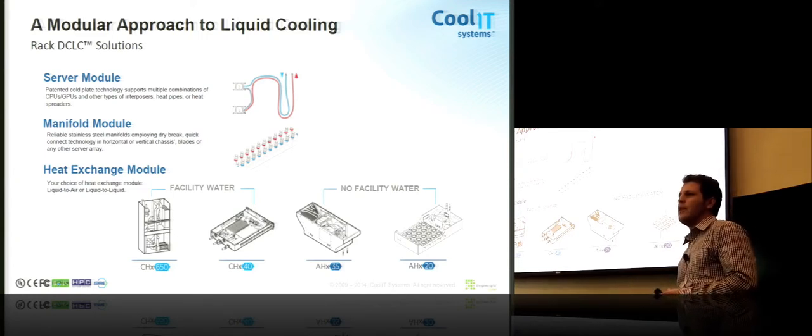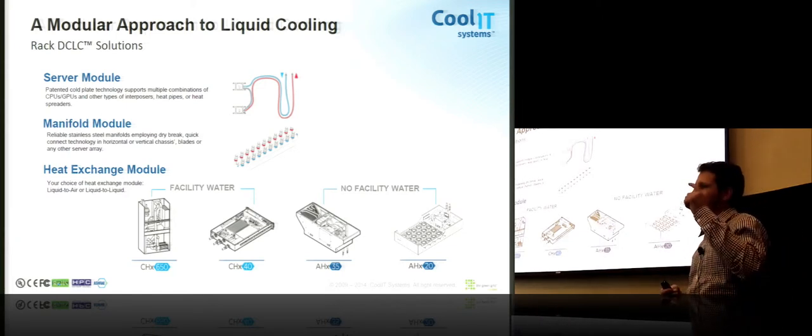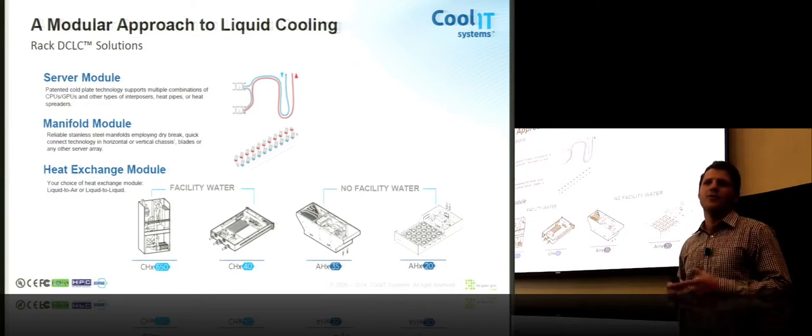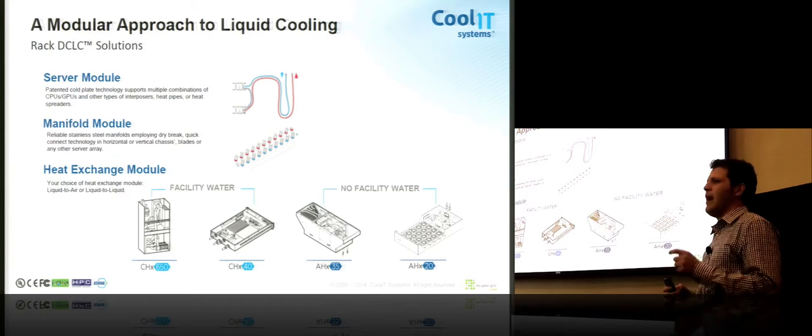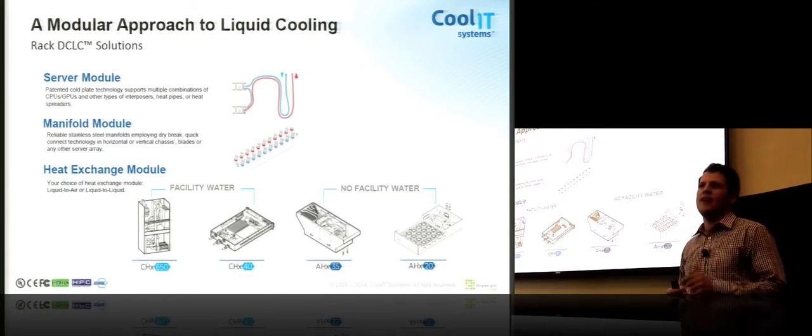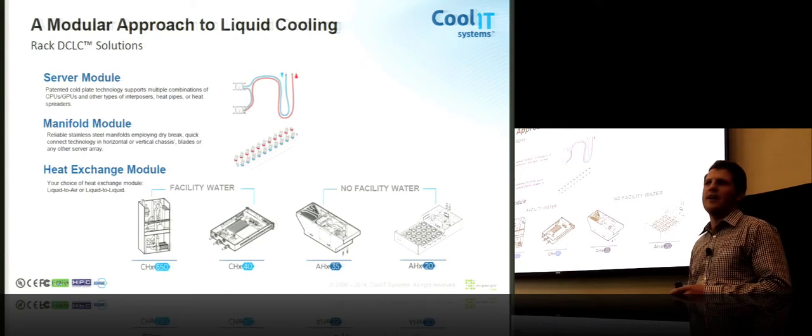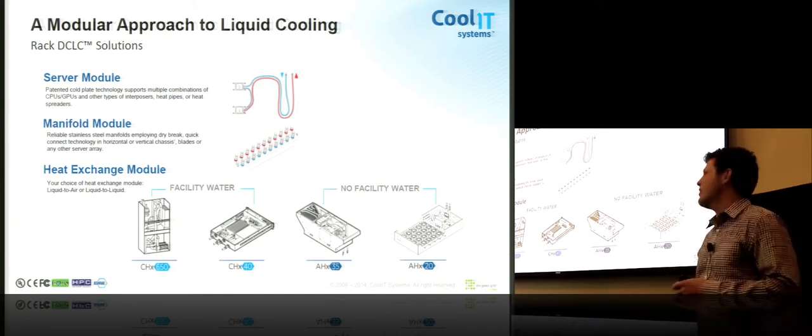We approach liquid cooling with a passive cold plate. So our sealed systems do have pumps on them, where they sit inside a desktop or server and circulate fluid through the sealed system. What we're talking about here in the Rack DCLC world is a passive cold plate. So it's only 15.6 millimeters high, which allows us to fit inside, of course, all 1U servers, but even very tight blade configurations.